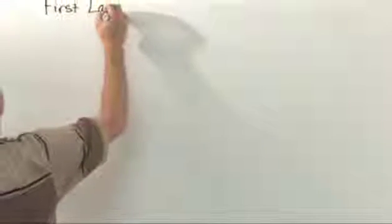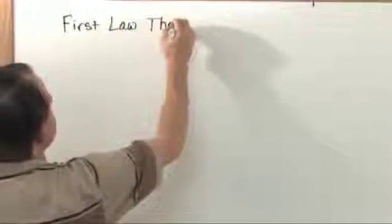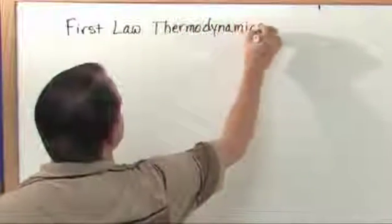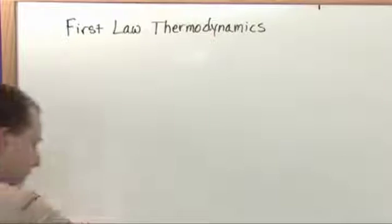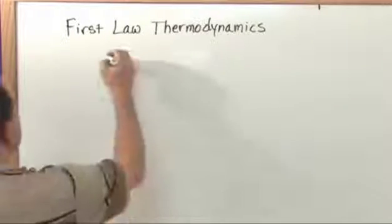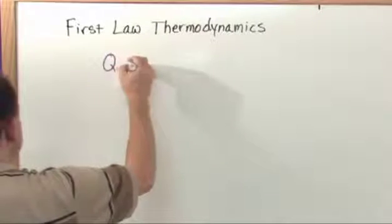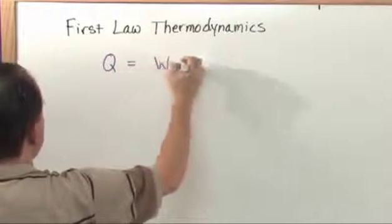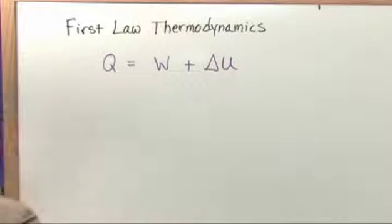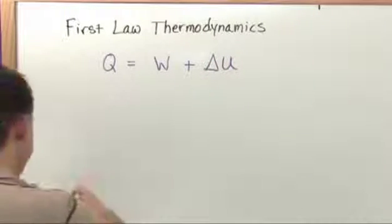So the First Law of Thermodynamics is actually not a very complicated looking equation compared to what you might think. Q is equal to work plus something called delta U, and I haven't told you what that is. So let's go ahead and figure it out.